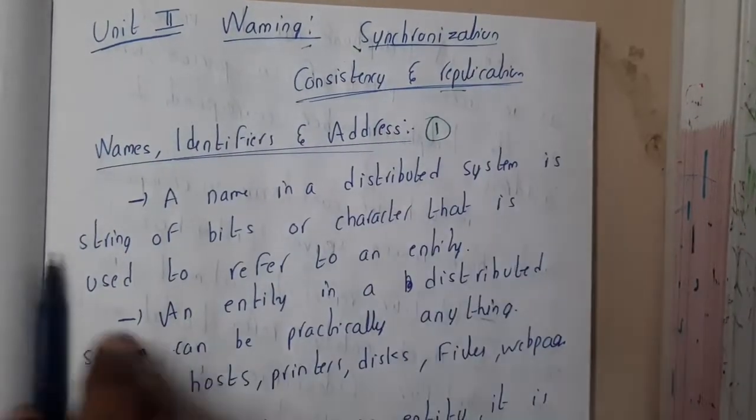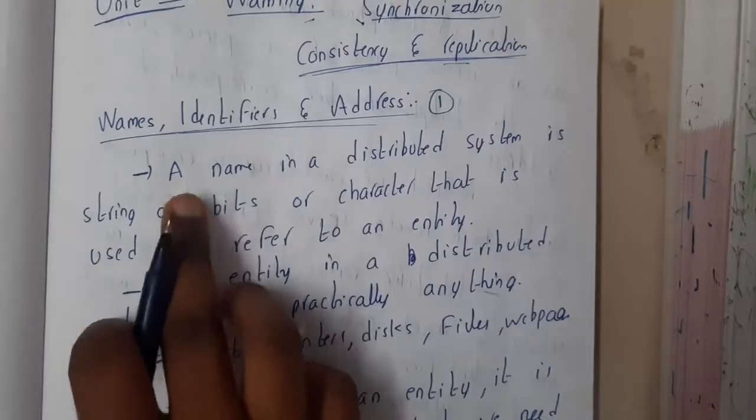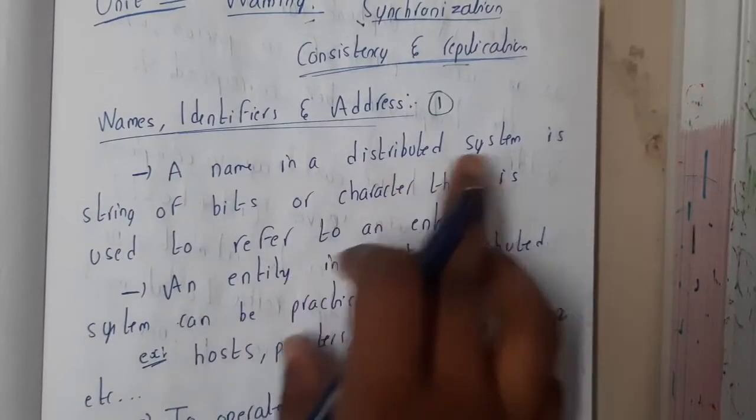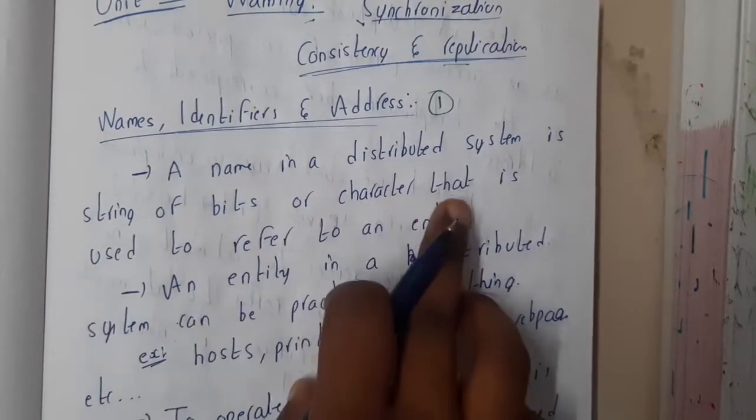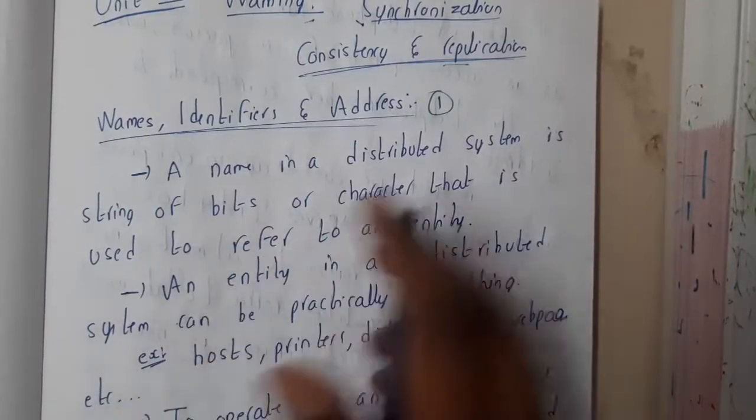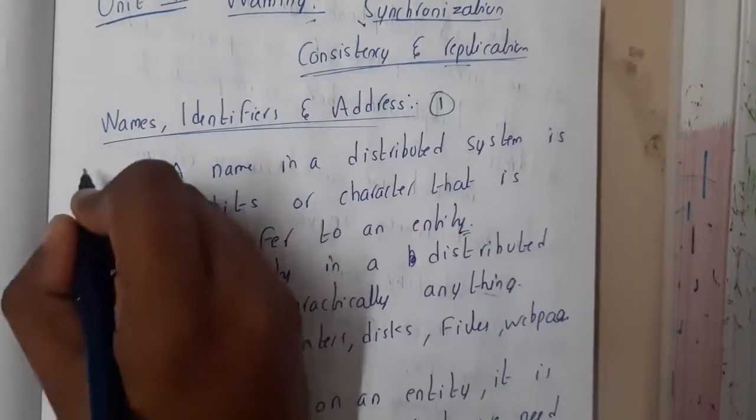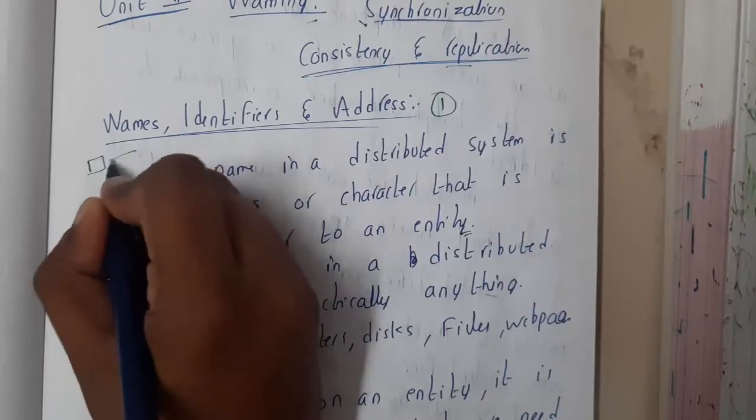Okay, so name. A name in a distributed system is a string of bits or characters that is used to refer to an entity. So basically, name is something given to a particular thing, and that thing we call an entity.